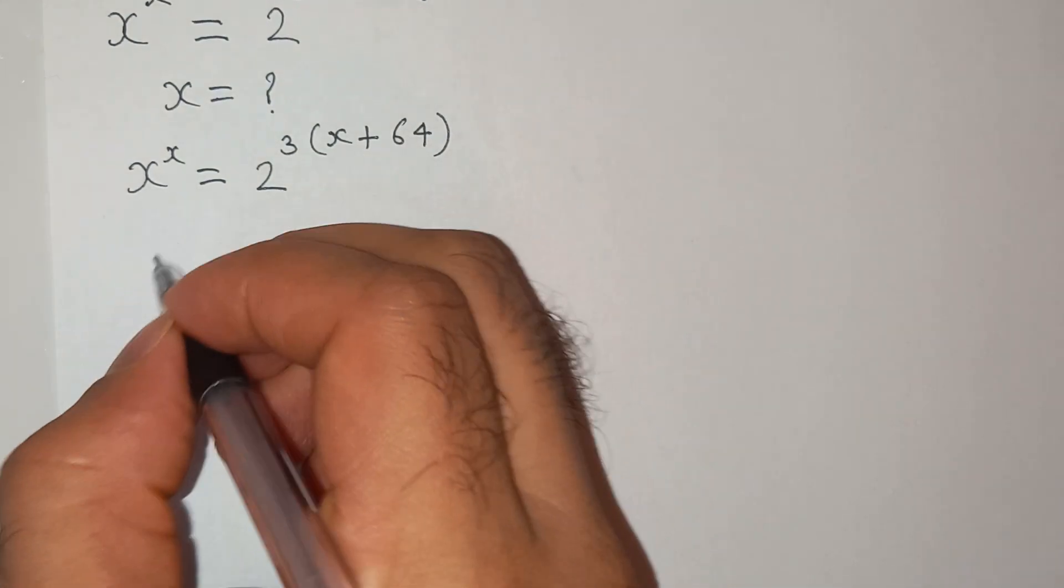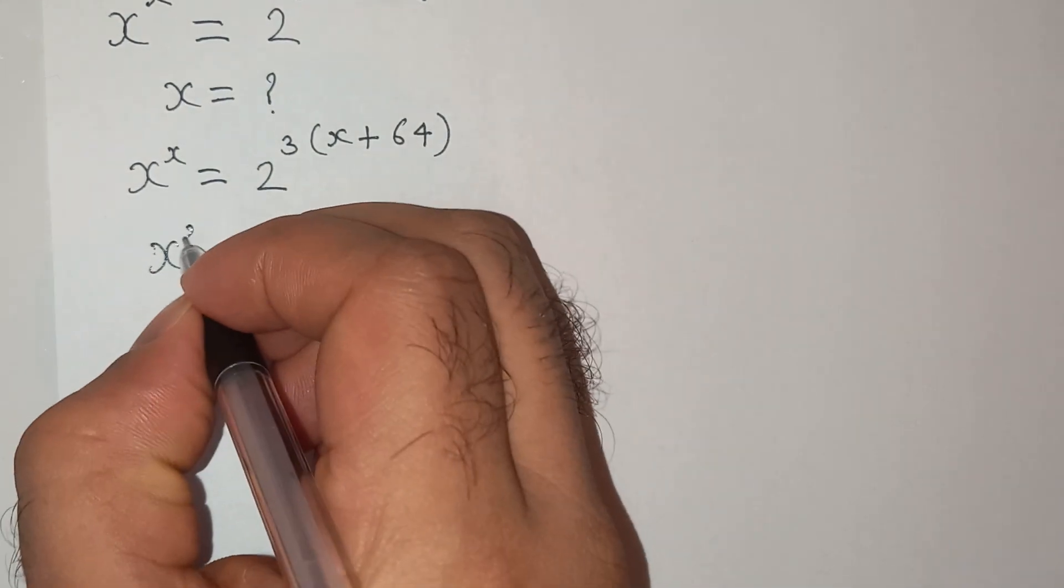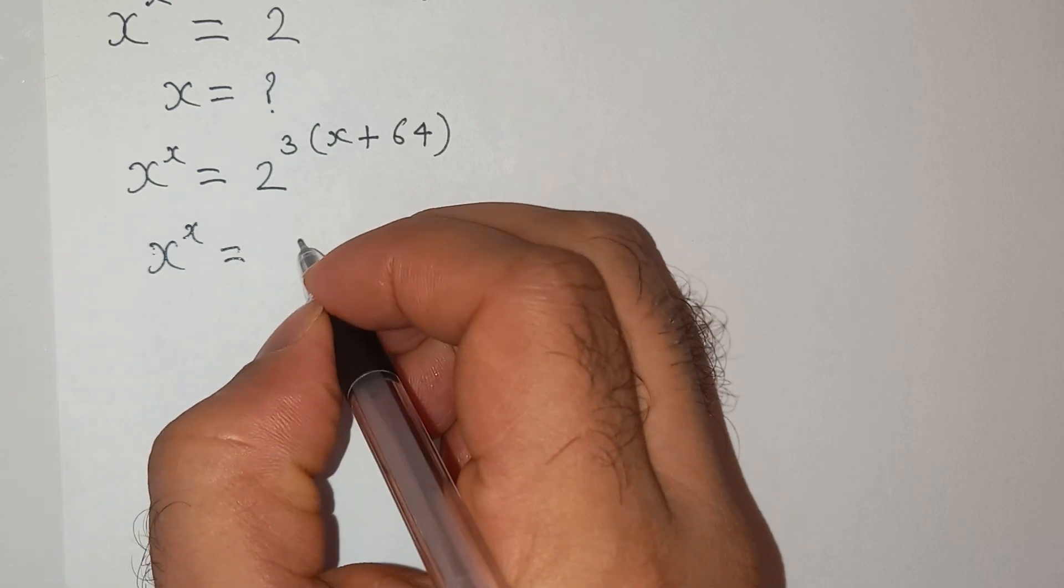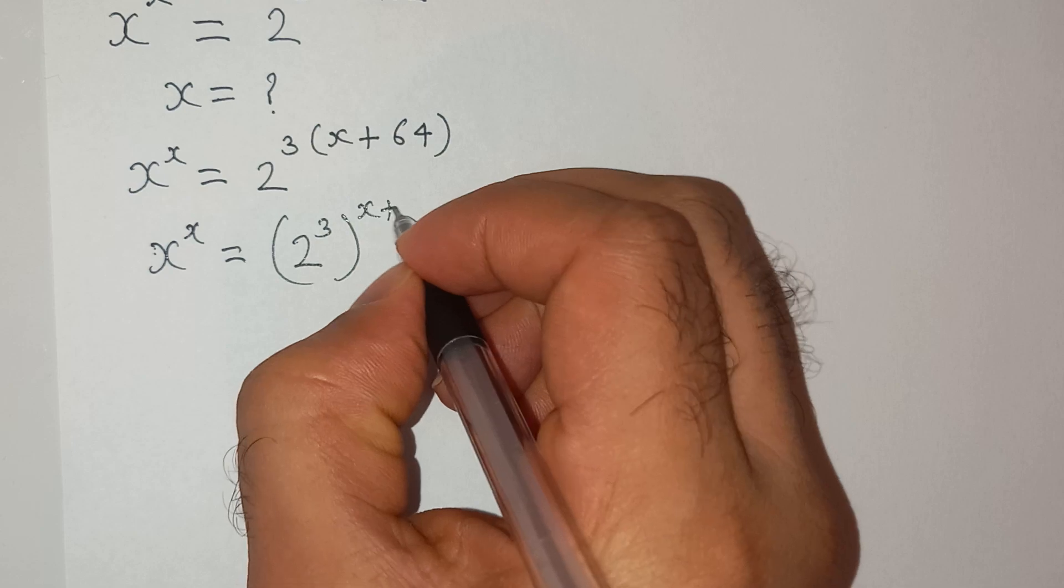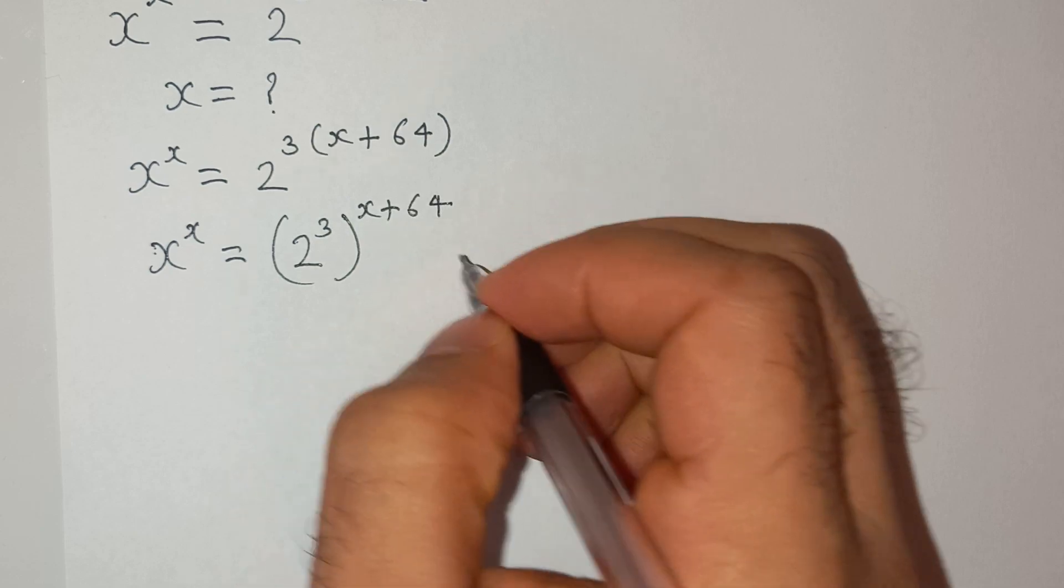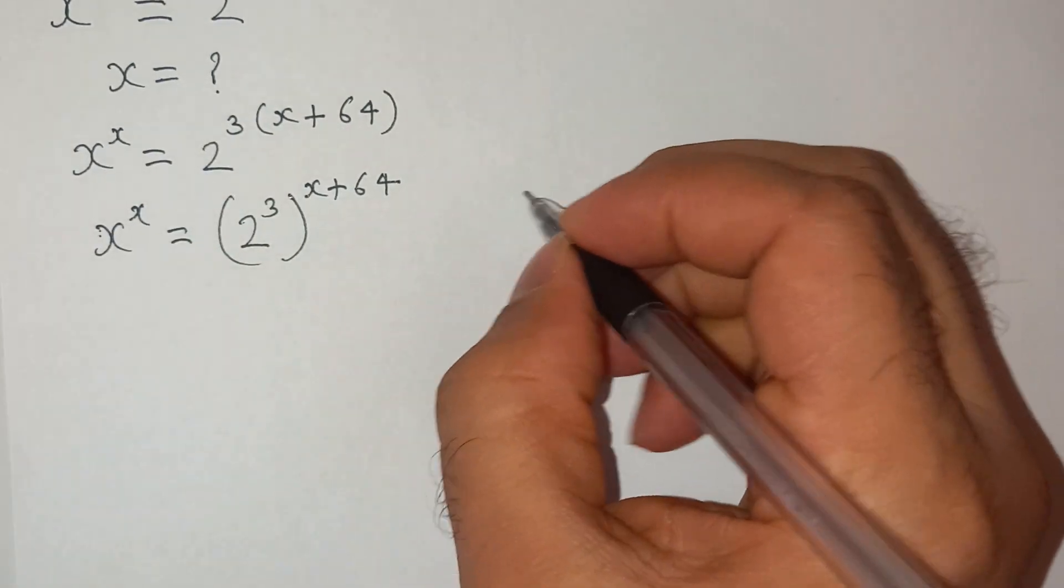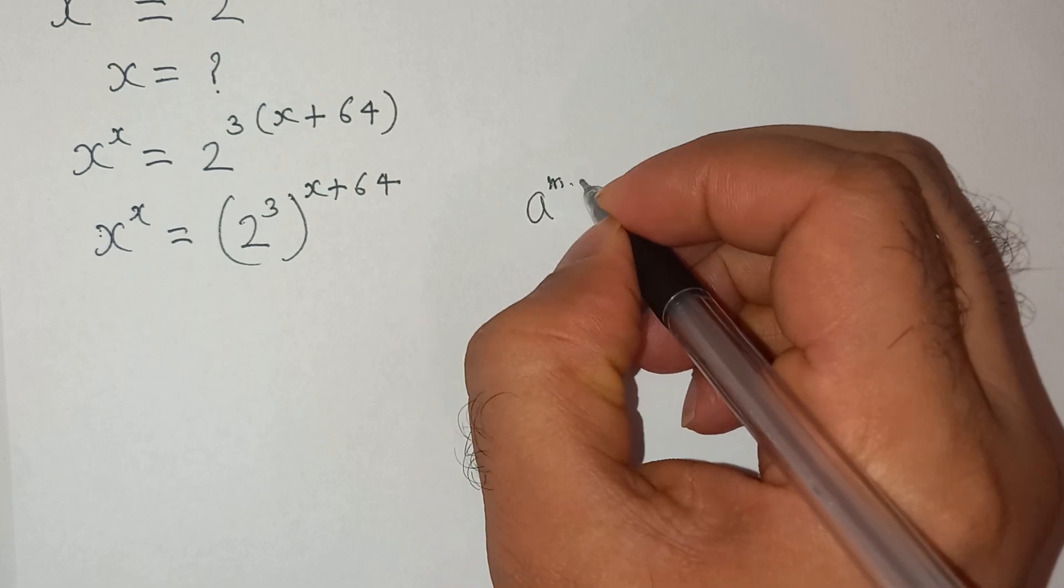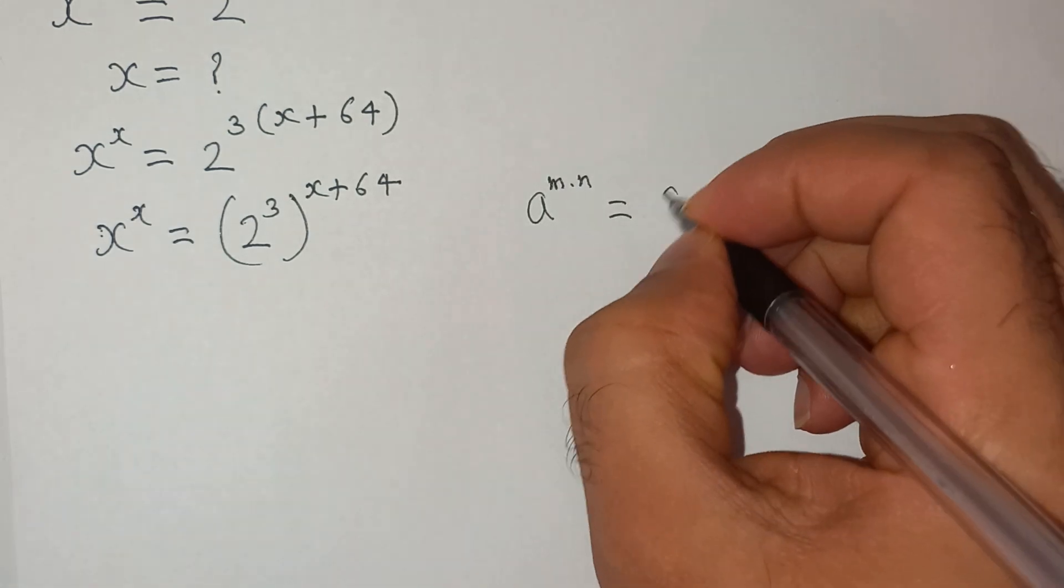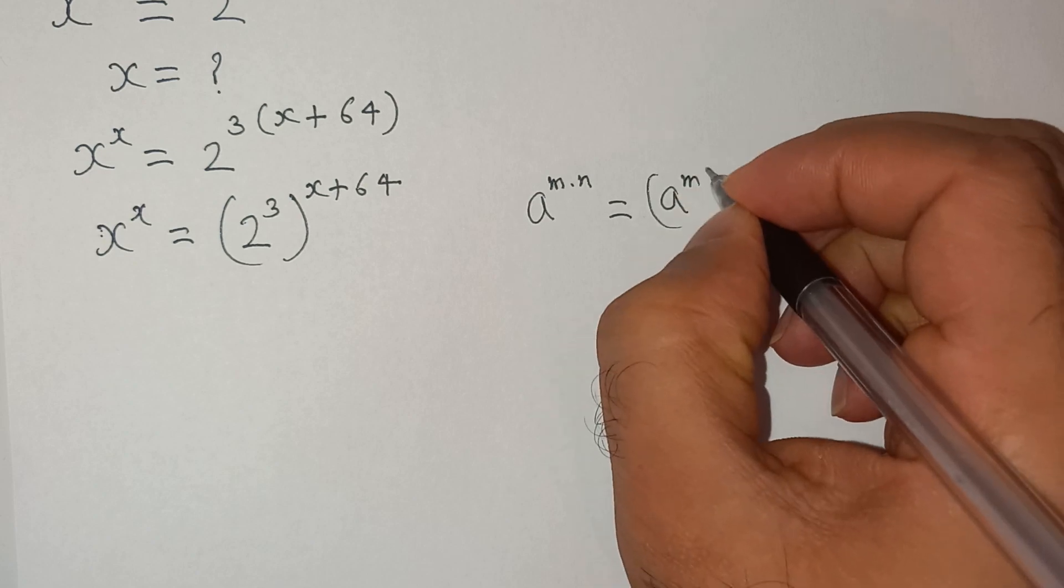Now this can be written as x power x equals to 2 cube power x plus 64. So I have used this exponential rule which is a power m power n equals to a power m bracket power n.